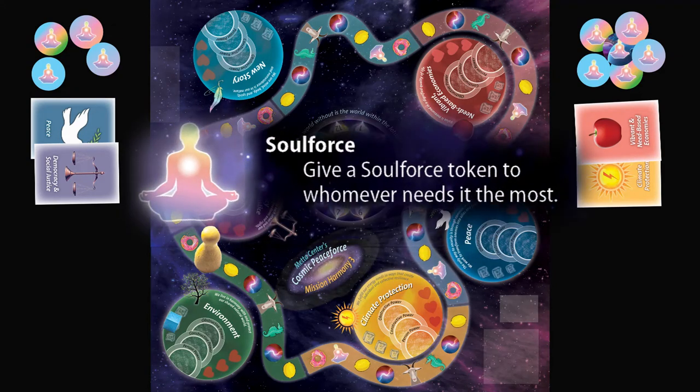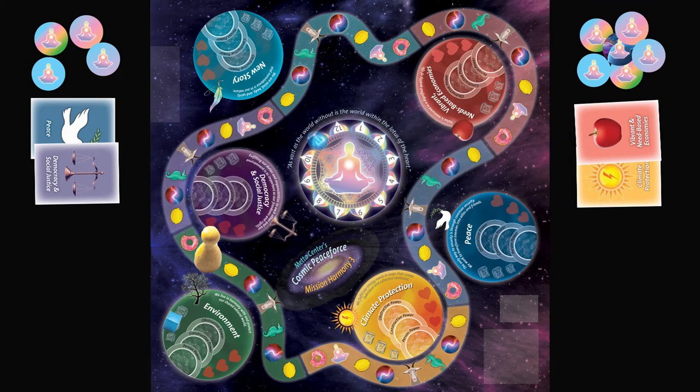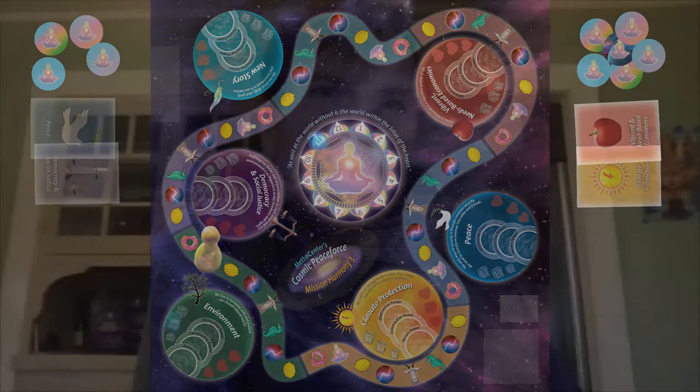If I look at the soul force token or the bliss person, as we sometimes refer to them, I can take one soul force from the larger pile and give it to the person who needs it most. At this point, I'll look around the group and see that our friend Michael is in dire need of a soul force token, so I'll give one to him.